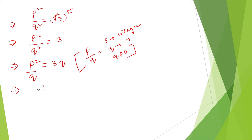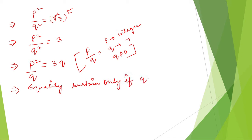Therefore, the equality is sustained only if q is equal to 1. So therefore p squared is equal to 3, where q is equal to 1.